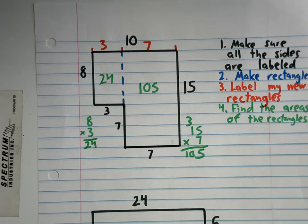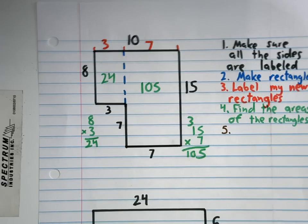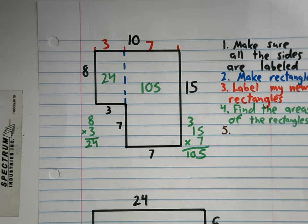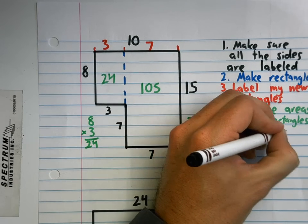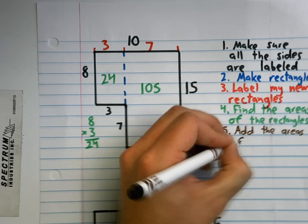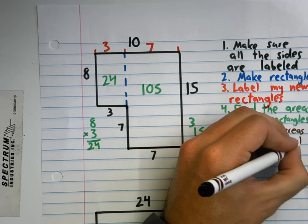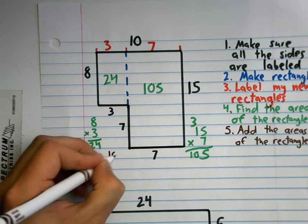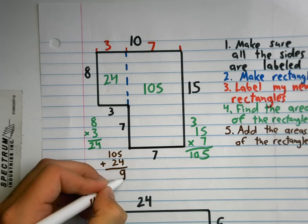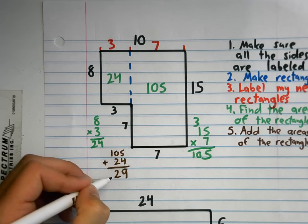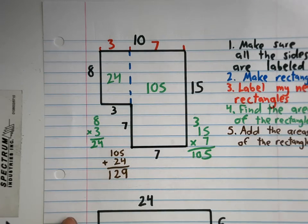But guess what? I'm not done yet. Who thinks they can tell me what I'm going to write down for step number five? Yes, I'm going to add the areas of the rectangles. So I'm going to go one hundred five plus twenty-four. Five plus four is nine. Zero plus two is two. One plus nothing is one. My area of this whole thing right here is one hundred twenty-nine. And we'll say square inches.